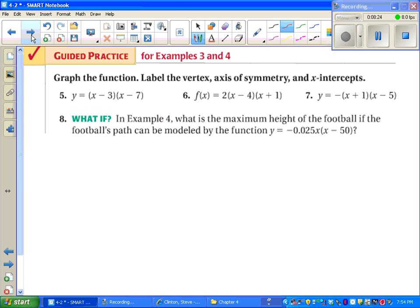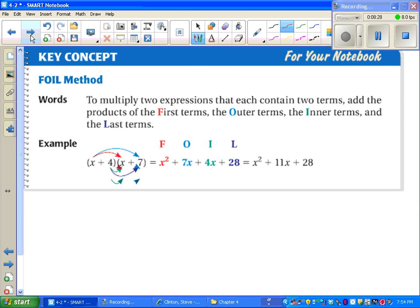At this point, you can pause the video and try these, or you can do that later. Next, we see FOIL. It's the same thing as the distributive property. FOIL is just a little acronym that a lot of people like to use. First, outer, inner, last. Not much to say about this. I think we're all experts at it.